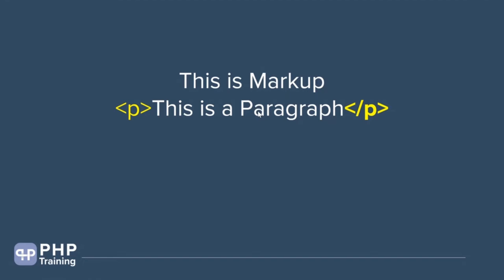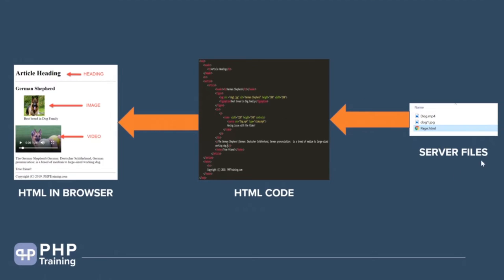HTML marks up the content and tells the browser how to display the data. On the server you have files like page.html, dog1.jpg, and dog.mpg — a video, an image, and an HTML file. In HTML code you write markup: use an image tag for an image, a video tag for a video. You're telling the browser the path to the resource to print it. You can also link pages — one page to another — via HTML.